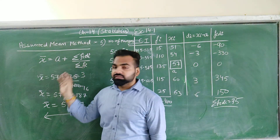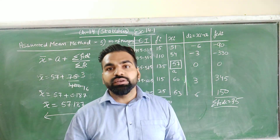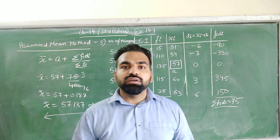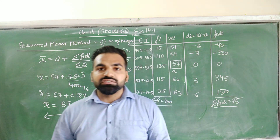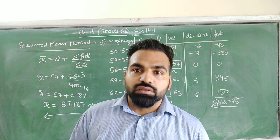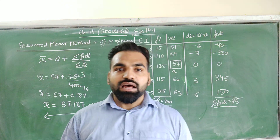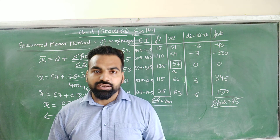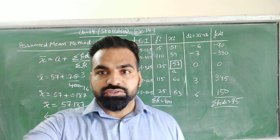So the formula is x̄ = a + Σfᵢdᵢ / Σfᵢ, where a is the assumed mean and dᵢ is the deviation. In the next video we will discuss the step deviation method, which is the last method to find the mean. Thank you very much.